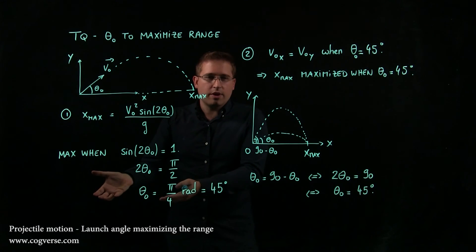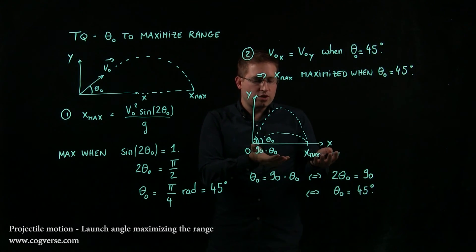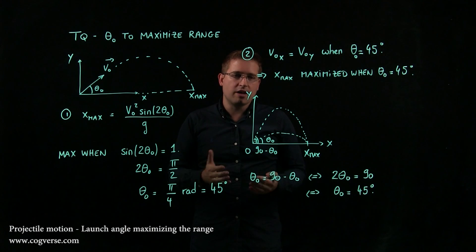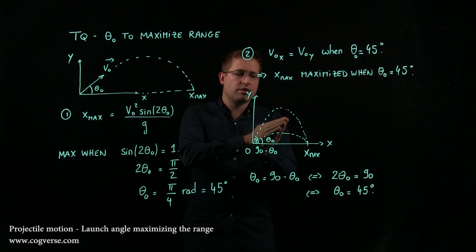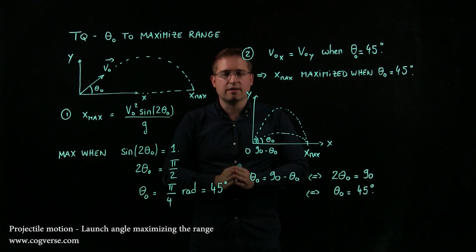So either use the equation, or argue conceptually that the maximum range is obtained when v₀ₓ equals v₀y, because that's the best compromise and the trade-off between a lot of horizontal initial velocity and as much vertical velocity as you can have.